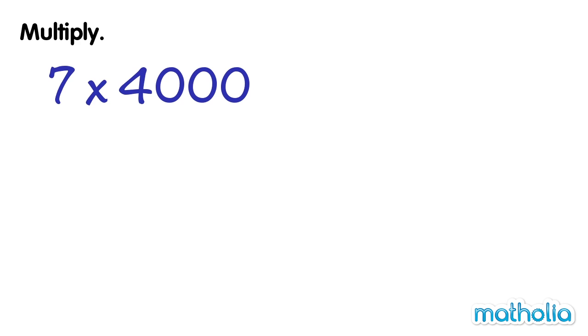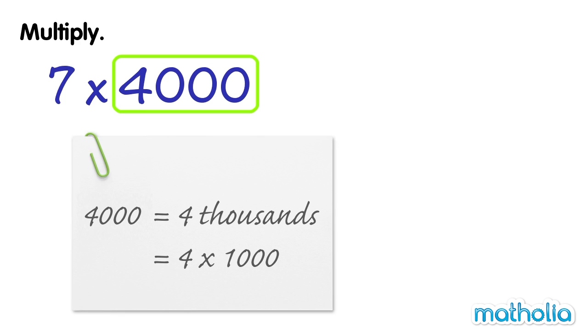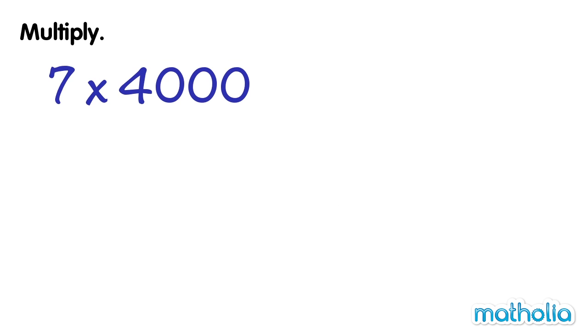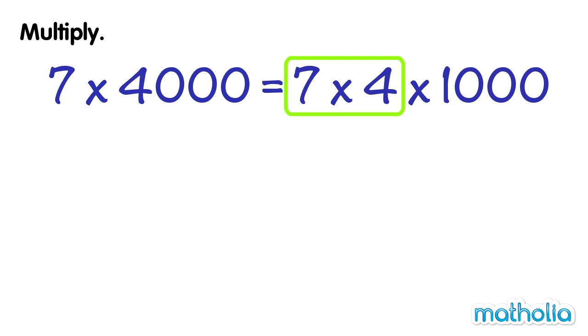Let's multiply 7 by 4,000. 4,000 is equal to 4 thousands, which we can write as 4 times 1,000. So we can say 7 times 4,000 is equal to 7 times 4 times 1,000. 7 times 4 is equal to 28.